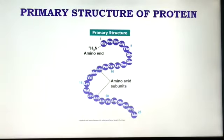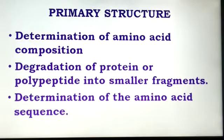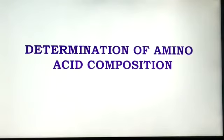The primary structure of protein is the linear sequence of amino acids forming the backbone of the protein. Primary structure is determined by three different methods: determination of amino acid composition, degradation of protein or polypeptide into smaller fragments, and determination of amino acid sequences. For amino acid composition, the protein is completely hydrolyzed to liberate amino acids, which are quantitatively estimated. Hydrolysis may be carried out using acid, alkali, or enzyme treatment. Pronase is a non-specific proteolytic enzyme that causes complete hydrolysis of proteins. The liberation of amino acids from protein can be determined by chromatography techniques.